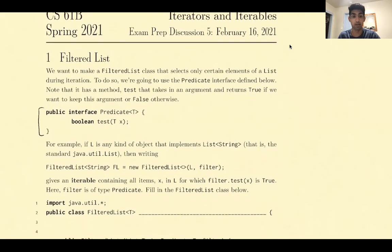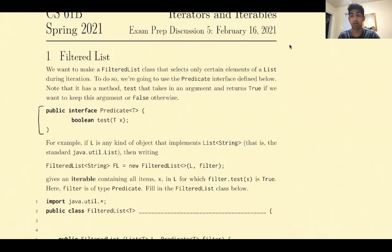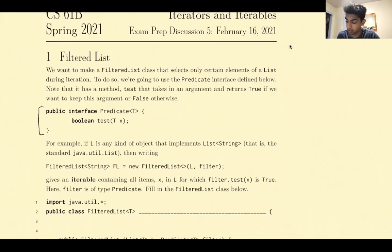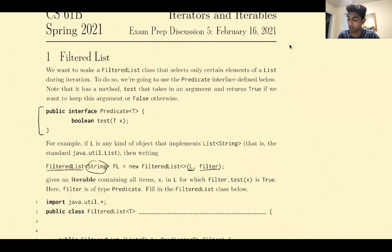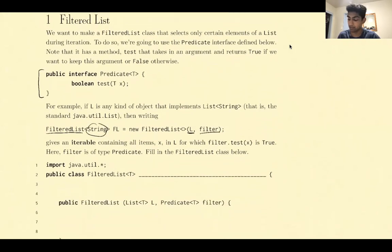Suppose that we have L, which is some object that implements a list of String. What we can do is create a new FilteredList that has strings in it, works on the given list, and selects items with a given filter. What fl is, is an iterable — this is very important — that contains all the items x in L for which filter.test(x) is true, where filter implements the predicate interface, and we need to fill in the FilteredList class below.